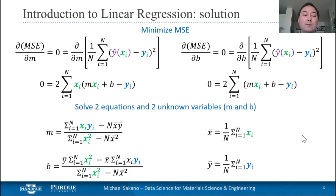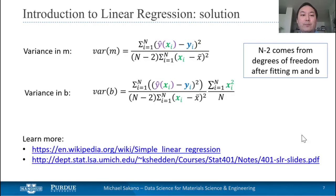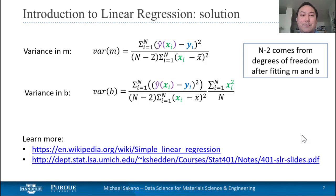Therefore, at the end, we will have two equations with two unknowns, and we'll be able to solve for our optimal m and b. We'd also like to know about uncertainties in our parameters m and b, and we do this by looking at the variance of the two parameters. For a more rigorous proof on these equations, we'd like to refer you to the resources shown at the bottom of the slide.